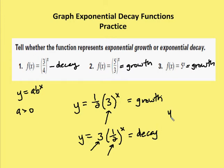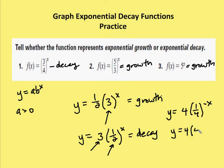Last problem: y = 4·(1/4)^(−x). Is that growth, decay, or neither? The negative exponent applies to the value in parentheses — I take the reciprocal of one-fourth, which gives me four. So I can rewrite this as y = 4·4^x. In reality this is a growth function, because the b value is greater than one.